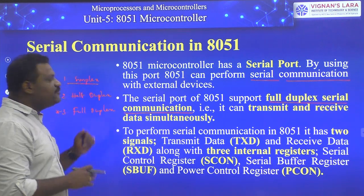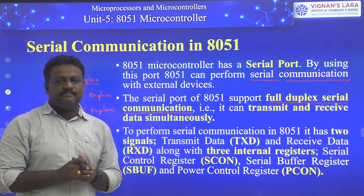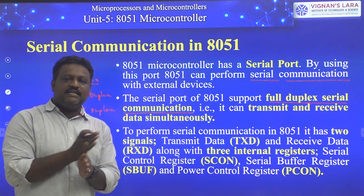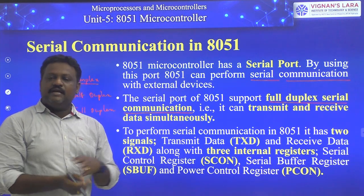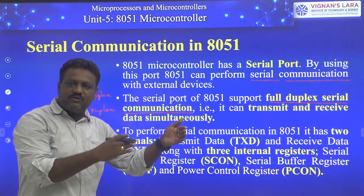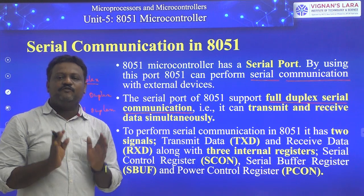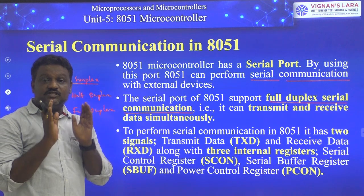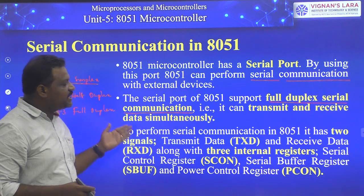Full duplex is an extension of half duplex — communication is possible between two stations simultaneously. Station one transfers data to station two at the same time as it also receives data from station two. Similarly, from station two's point of view, it receives data from station one while simultaneously transferring data to station one. Our 8051 microcontroller supports full duplex serial communication — it can transmit and receive data simultaneously.